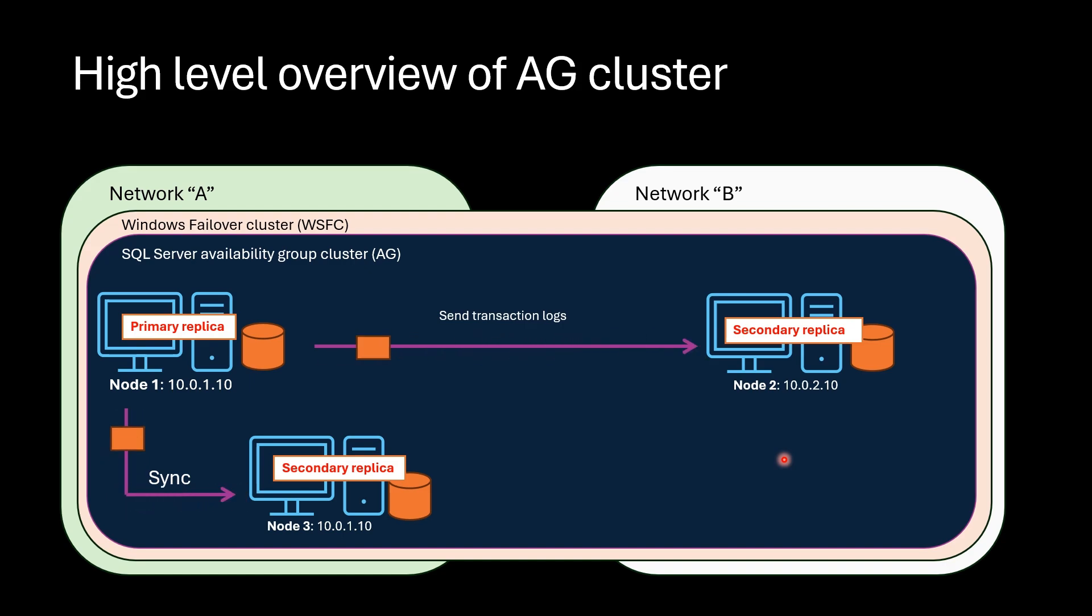There are some important points to mention here. They can be multi-subnet, multi-region and single subnet AG clusters. We created multi-subnet cluster here. In each AG cluster, there can be one primary replica and up to eight secondary replicas.